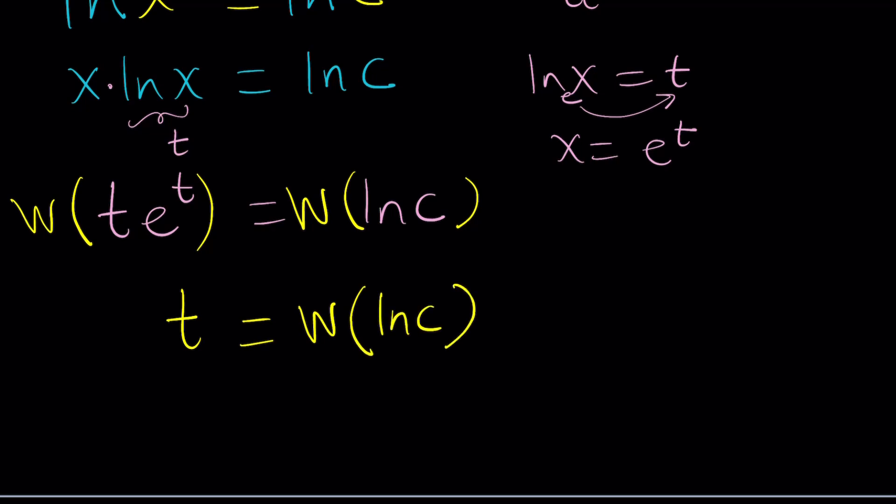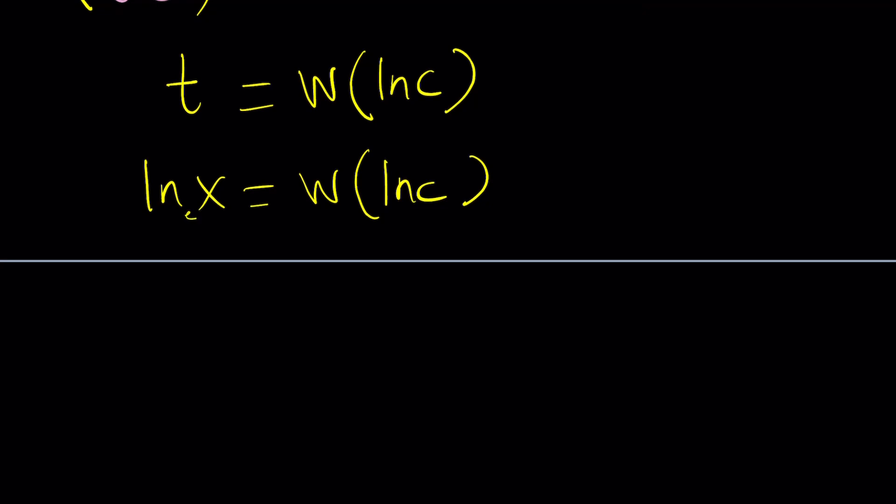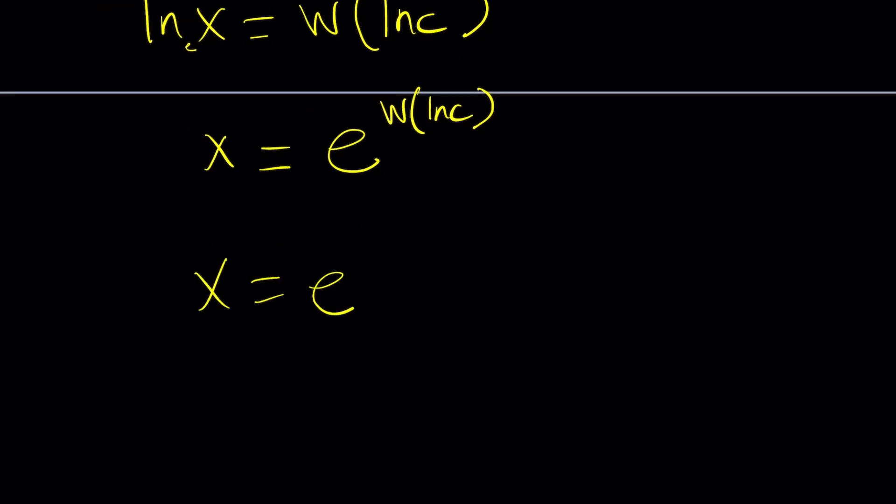Let's go ahead and back substitute. We can actually try to find x from here first. Notice that we got t value but t is ln x so let's replace t with ln x and then from here since the base is e we can write x as e to the power W of ln c.